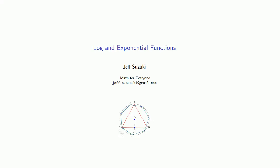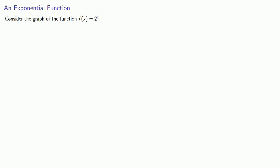Another type of function we could look at are log and exponential functions. Let's consider the graph of the function f of x equals 2 to the power x. We'll graph this function by finding the x and y intercepts, and possibly by finding additional asymptotes.